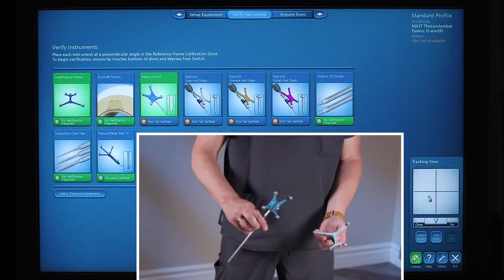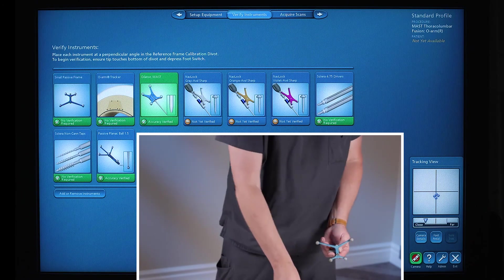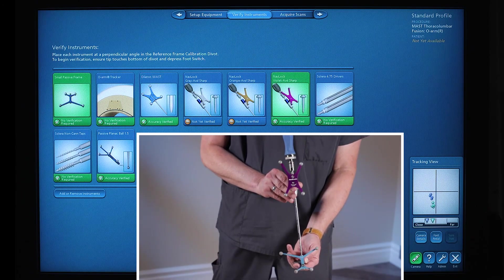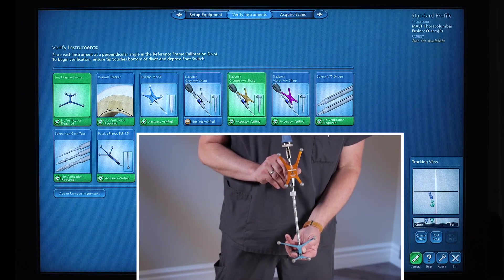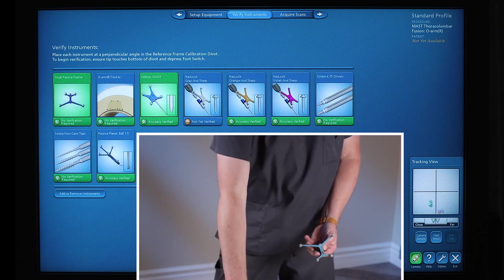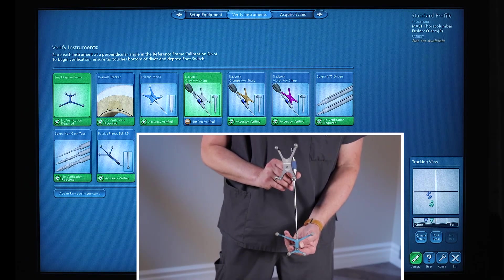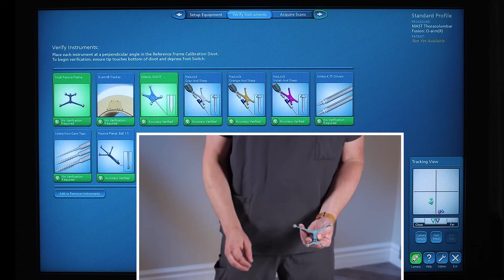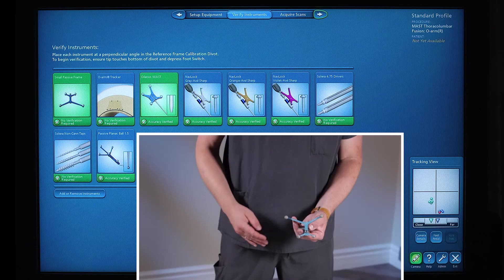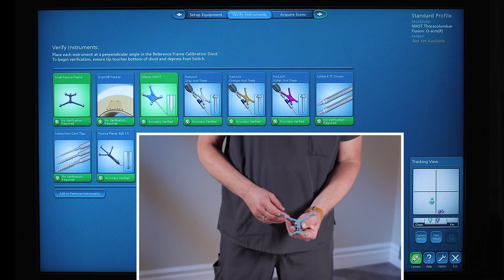Next, we'll do the mass dilator, the purple tap, orange screwdriver, and the gray awl. Once the tool cards turn green, you can then move forward. You can also verify later, but it's a good idea to have a scrub tech verify these before you're actually in the procedure.